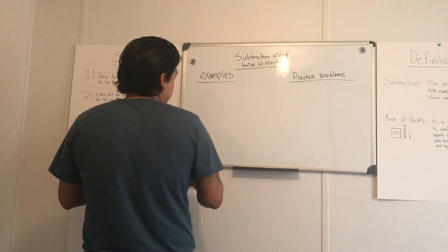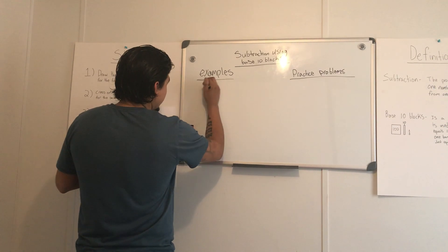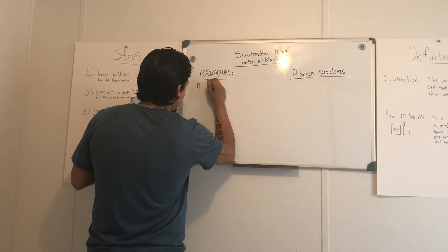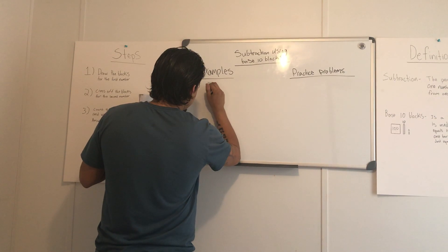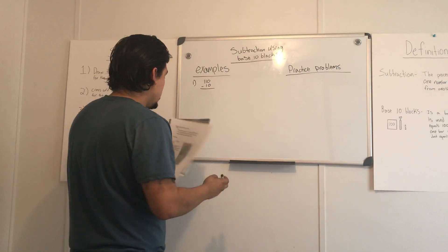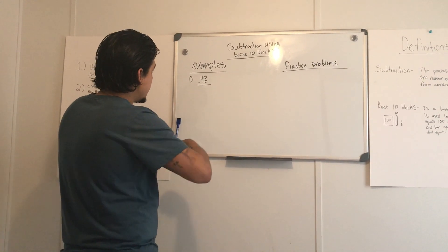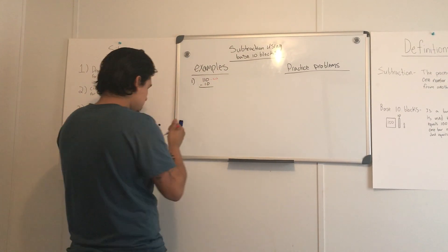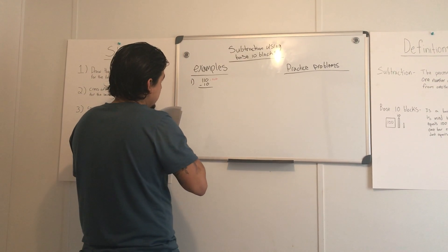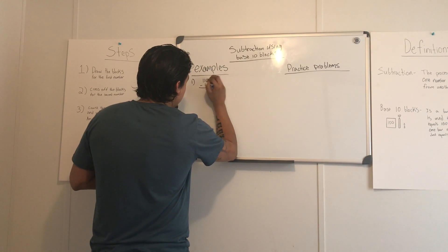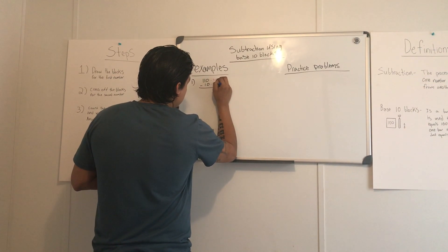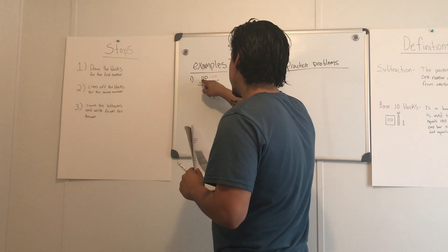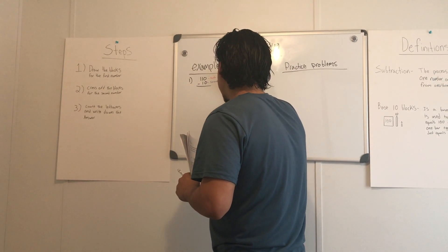Alright, for the first example, I want y'all to write this down on y'all's notes. It's going to be 110 minus 10. We know that the top number is going to be our first number and the bottom number is our second number.